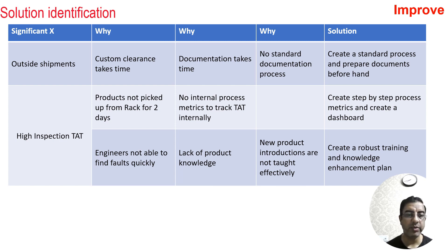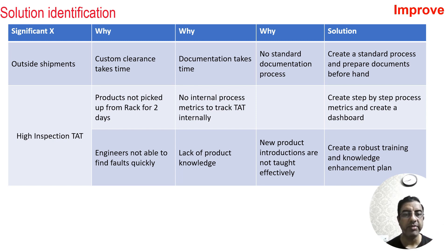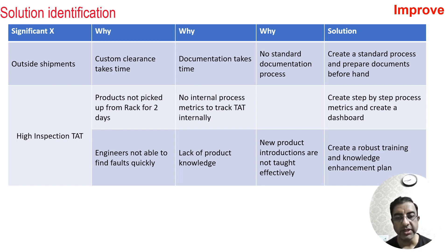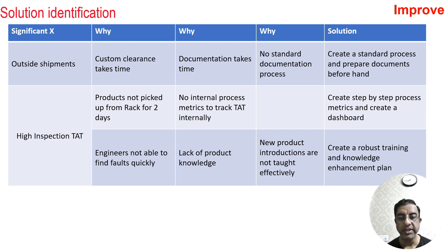The second significant X was high inspection turnaround time, caused by two reasons. First, products were not picked up from the rack for two days after arrival because there were no internal process metrics to track turnaround time — so the team created a step-by-step process metric and a dashboard. Second, engineers could not find faults quickly due to lack of knowledge, because new product introductions were not effectively taught. The solution was to create a robust training and knowledge enhancement plan so engineers could identify faults quickly.